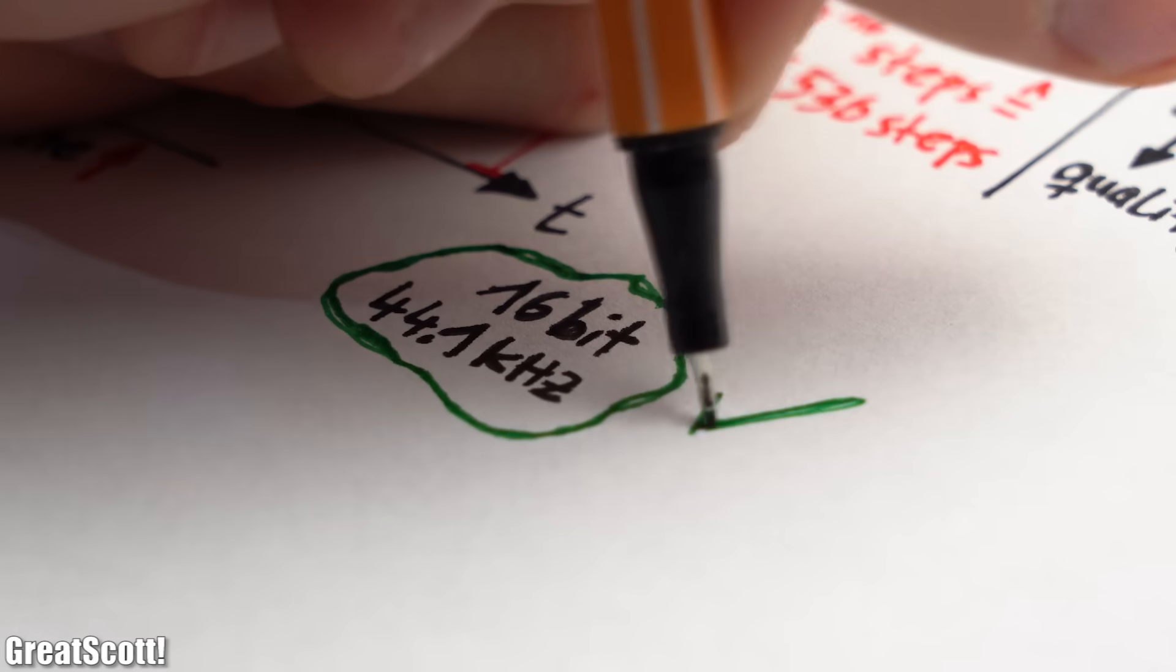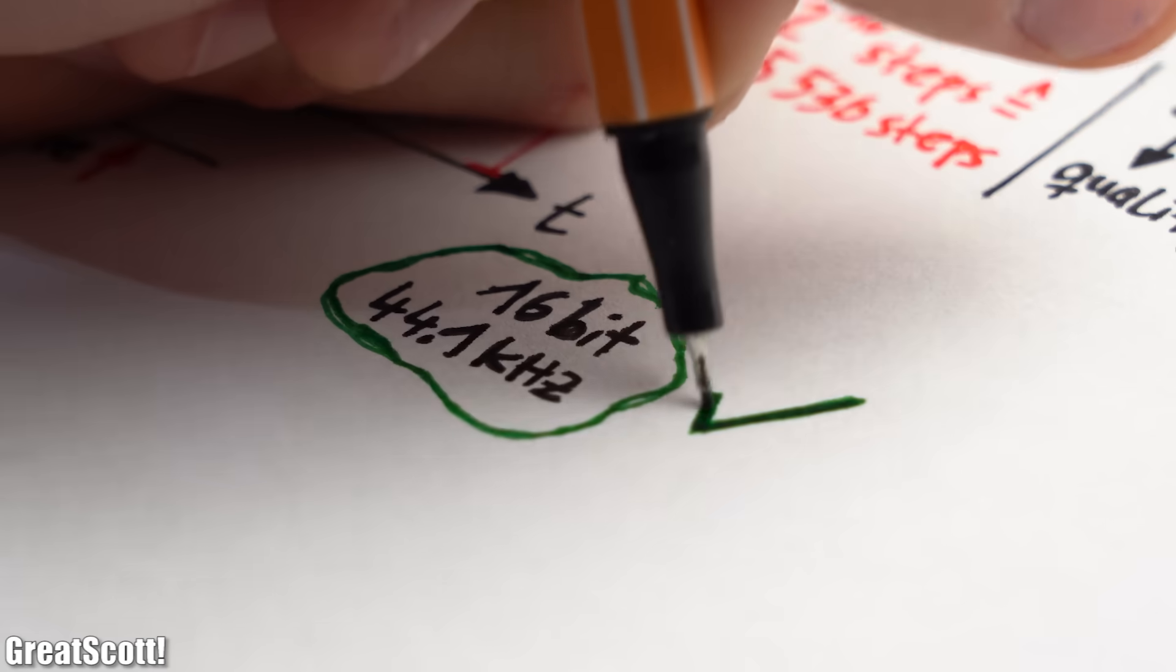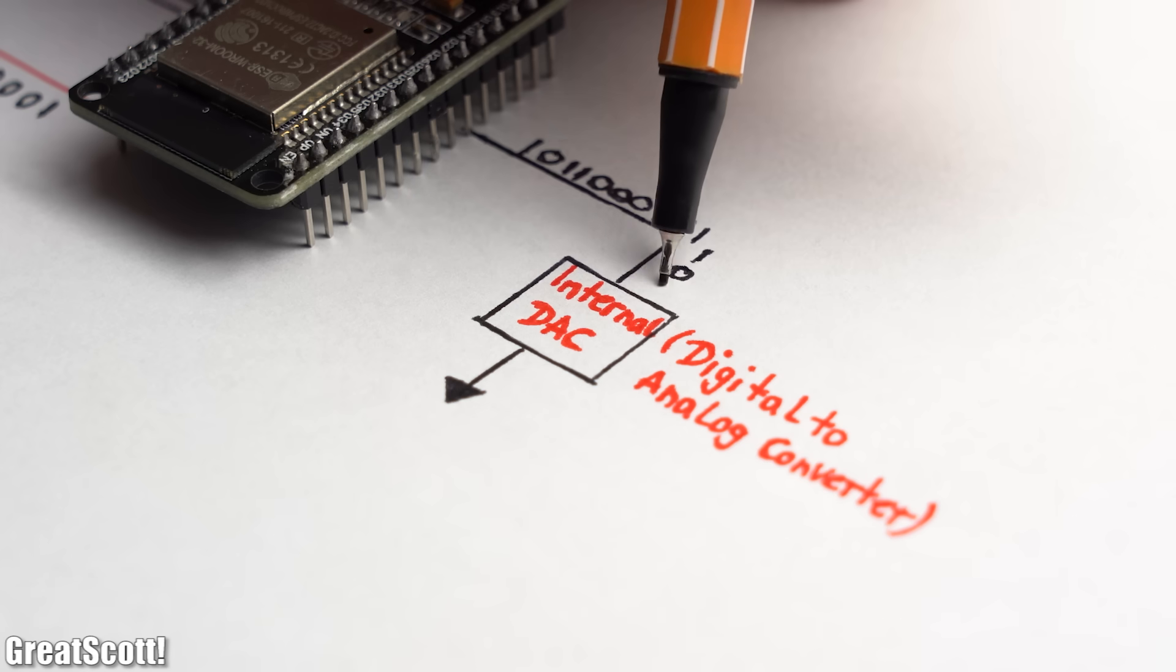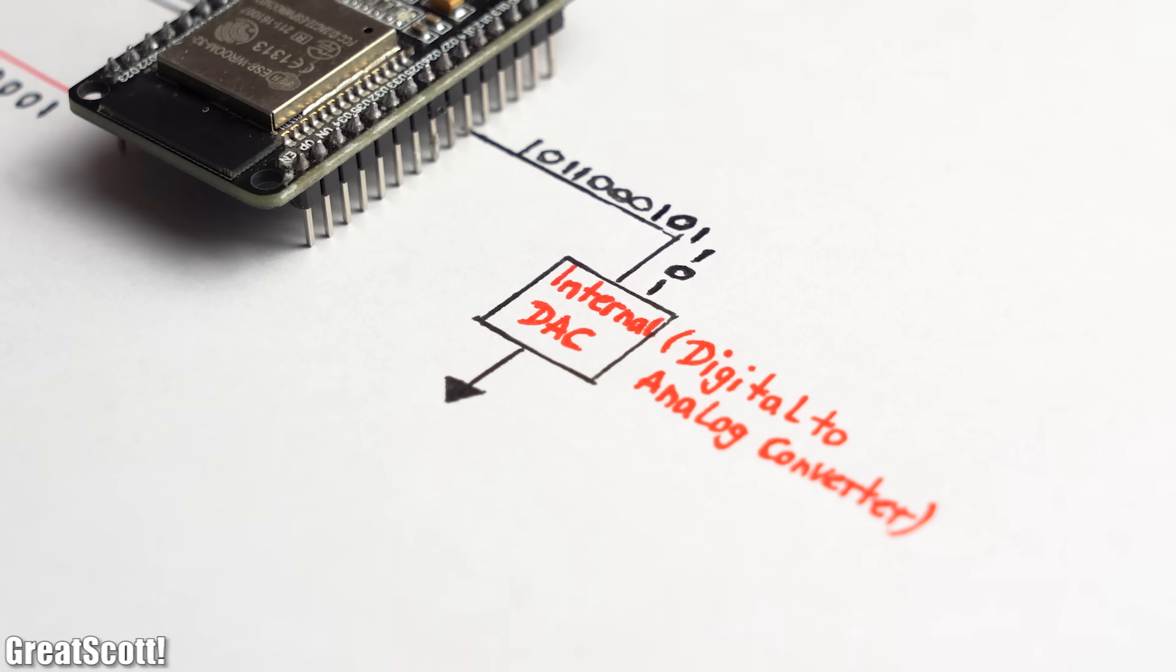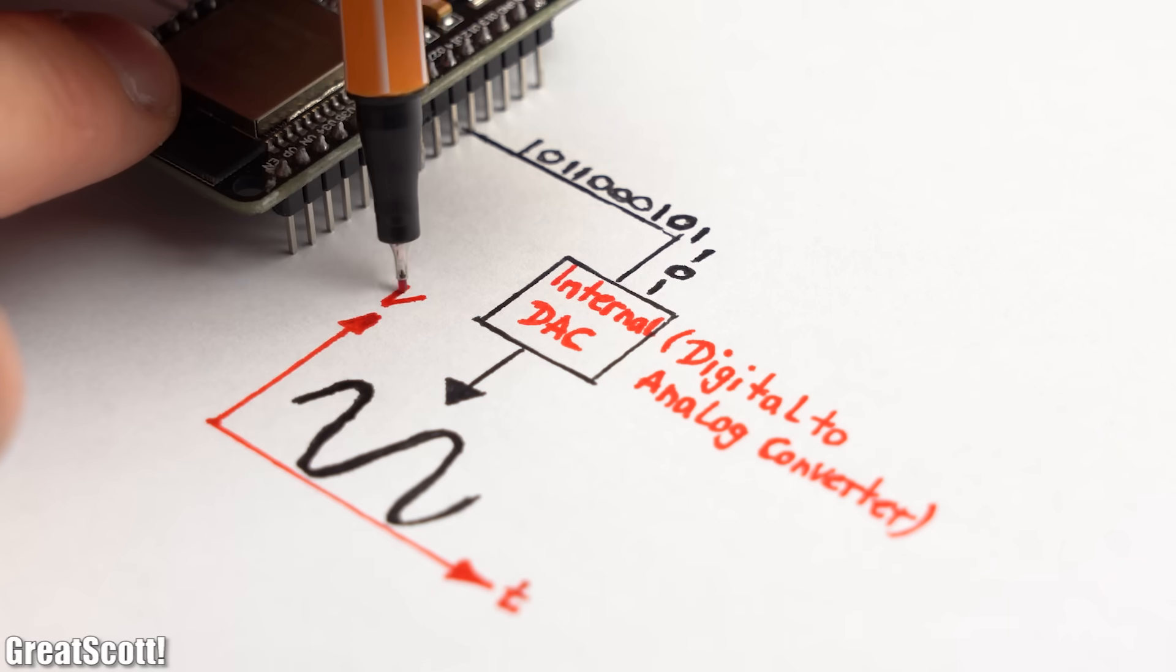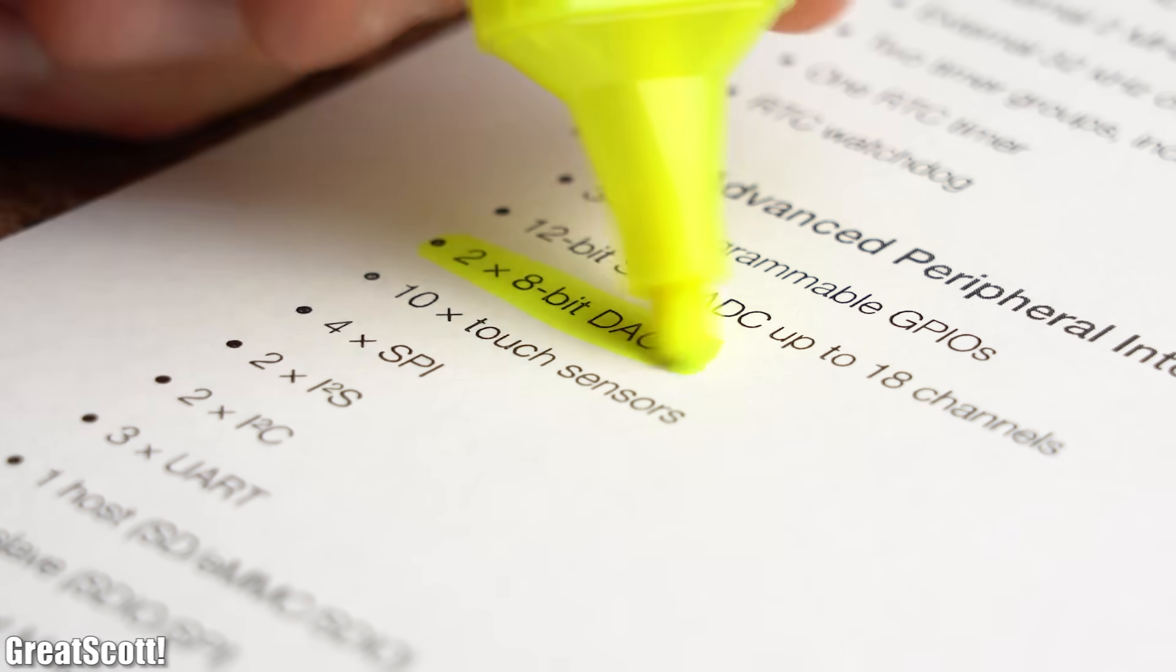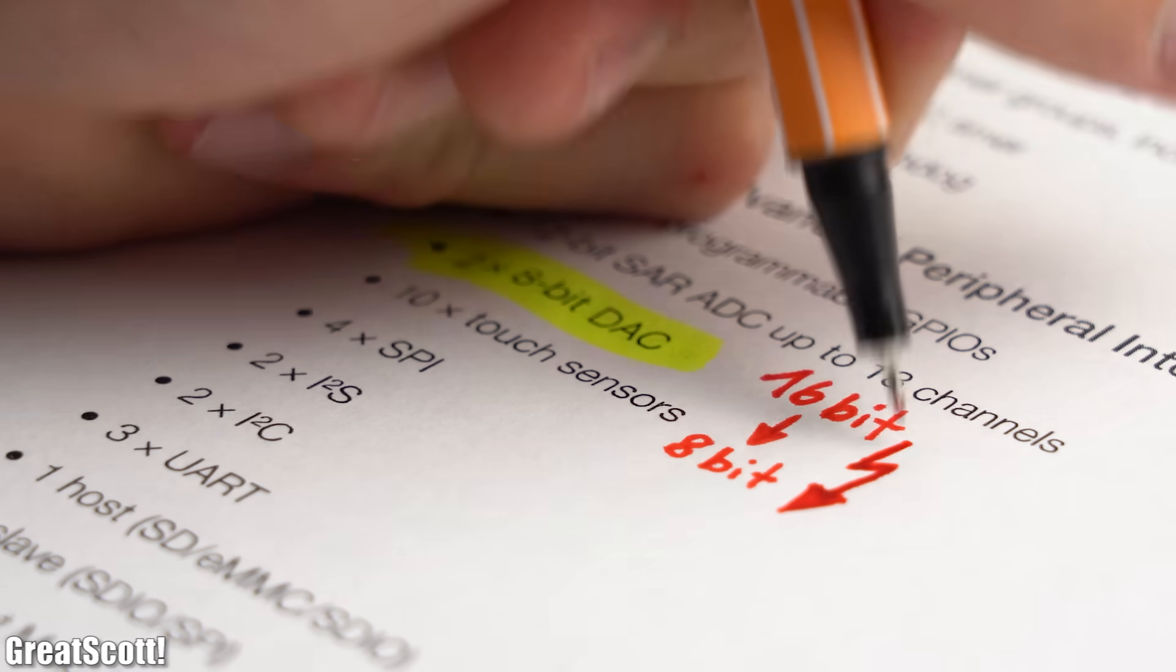But let me tell you that 16 bits and 44.1kHz sounds pretty good. So the input side is done and for the output side we could use the internal DAC, aka digital to analog converter of the ESP32 to create the analog audio signal. But sadly it only comes with a resolution of 8 bits which would act as a bottleneck for our audio quality.